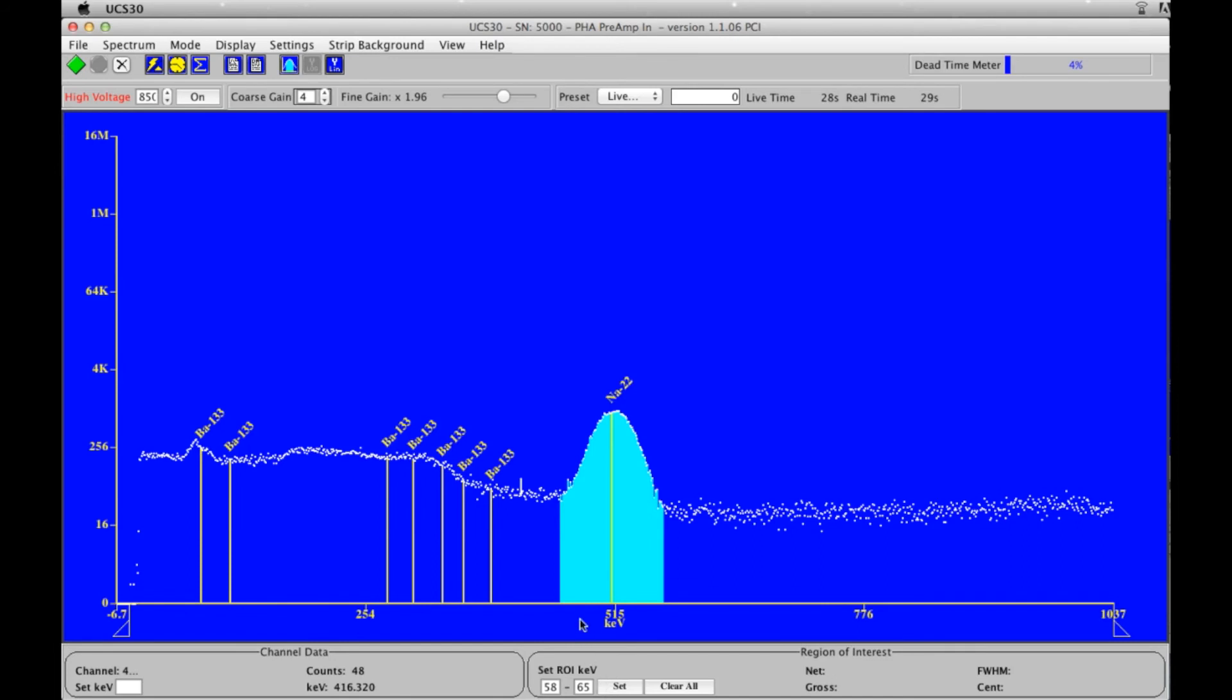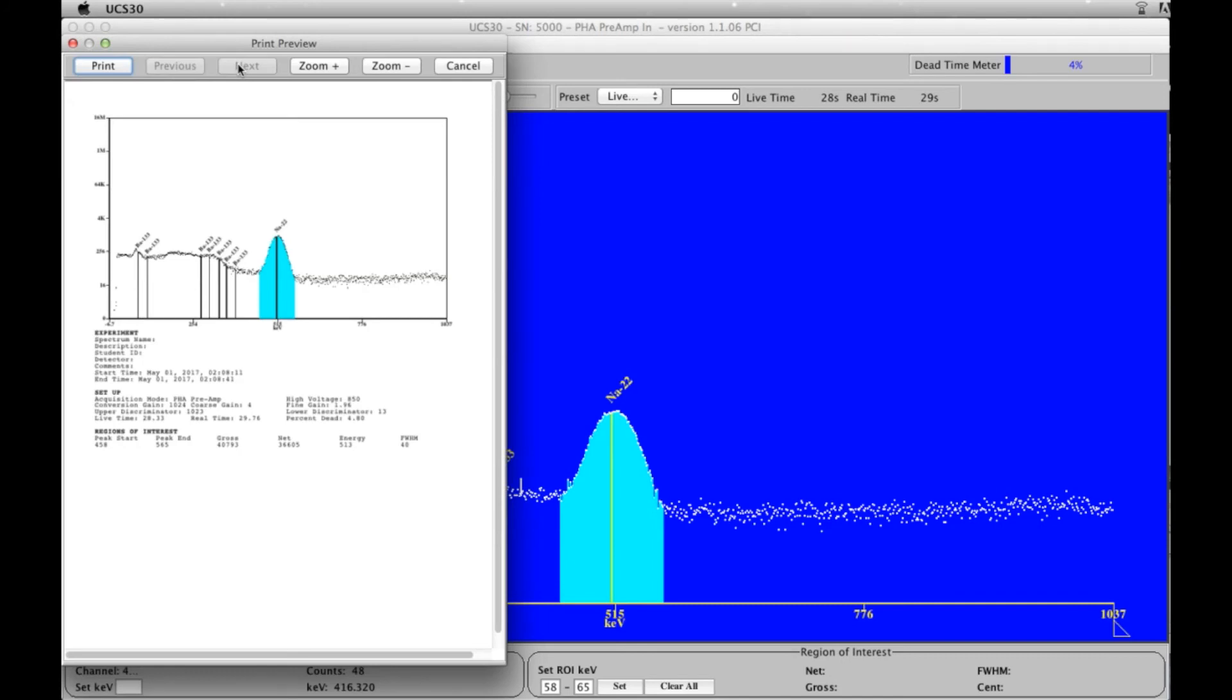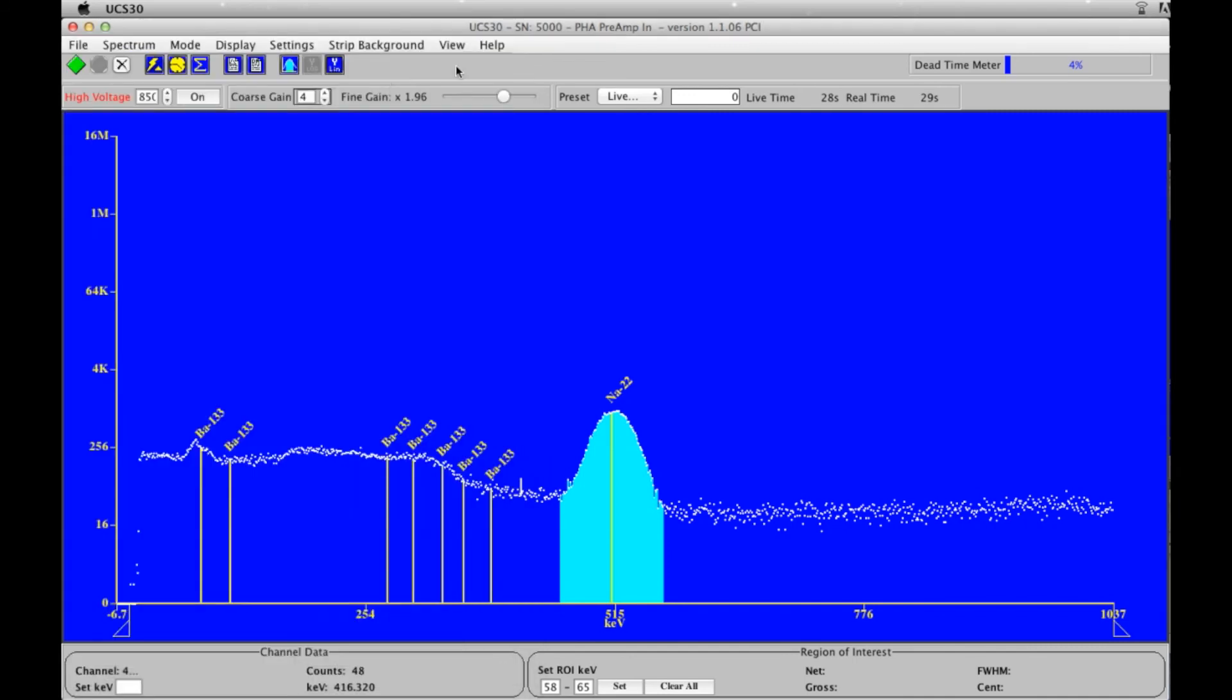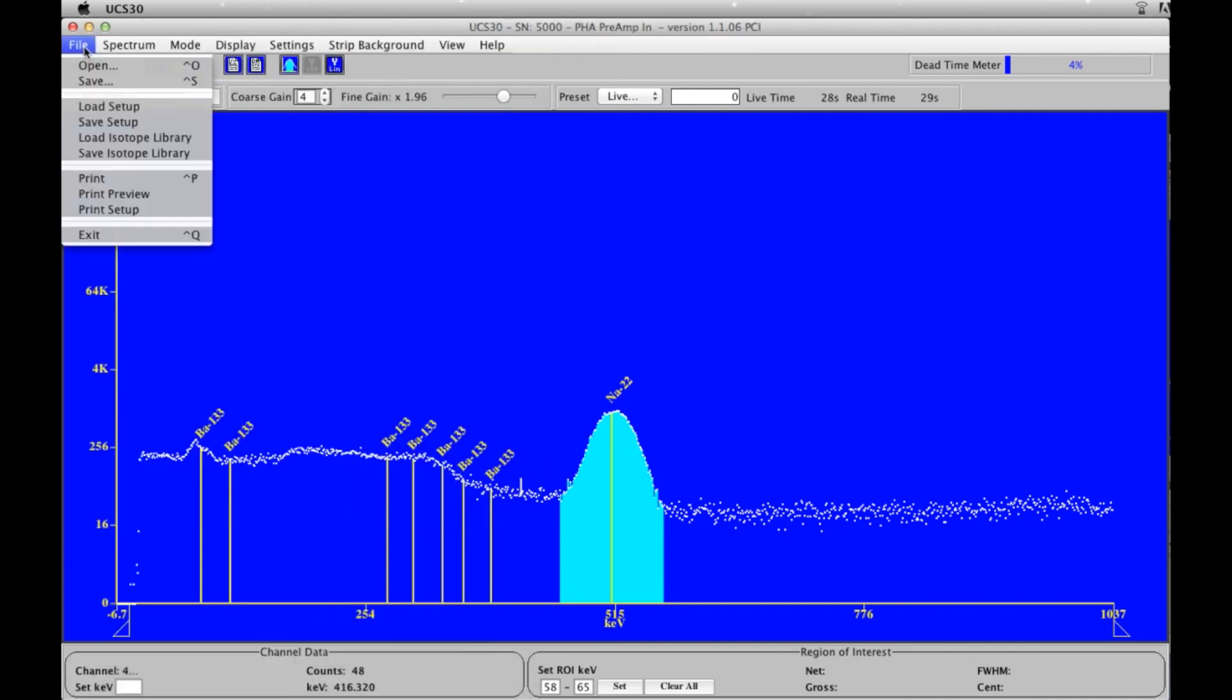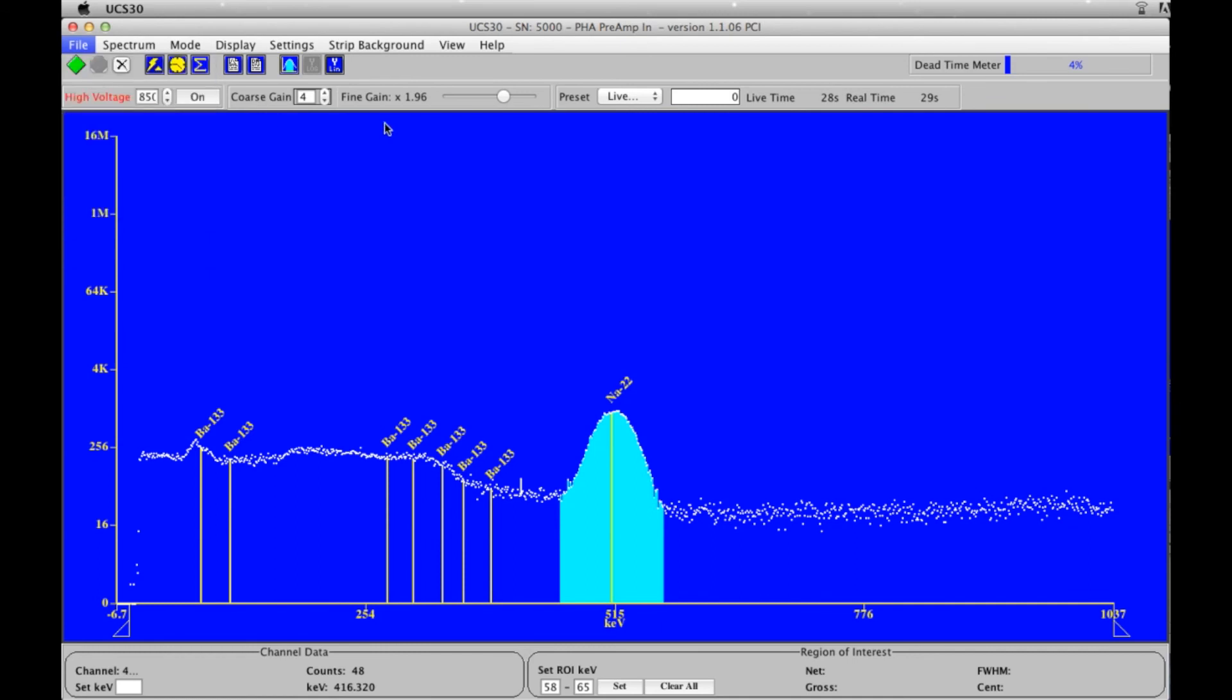We will try to acquire a peak report, and the gross is 40,793 counts, and the net is about 37,000 counts. The net represents the peak, whereas the gross includes the background. We can print this out if we wish, and we can save the spectra if we wish as well.